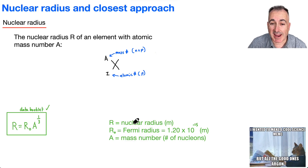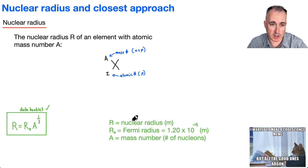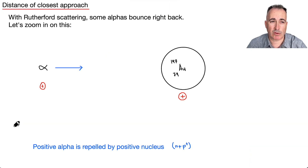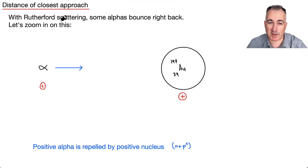A is the mass number — the number of nucleons — and it will be used to tell you the nuclear radius. Now let's remind ourselves about Rutherford scattering, because we're going to be talking about the distance of closest approach using this example.